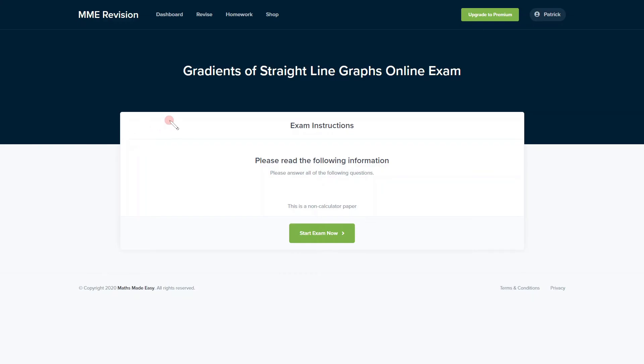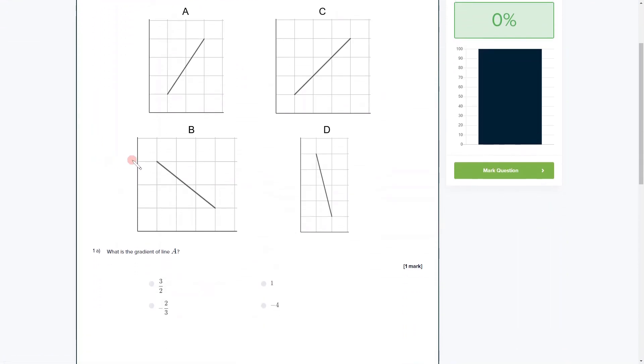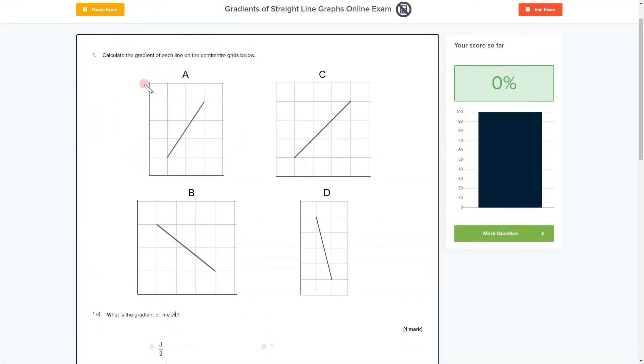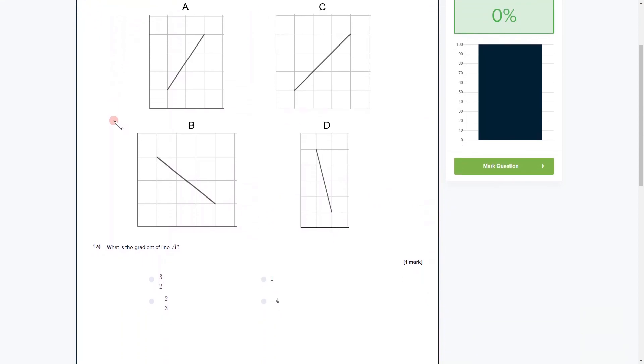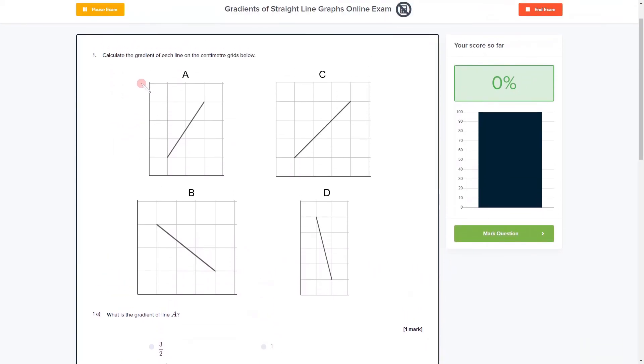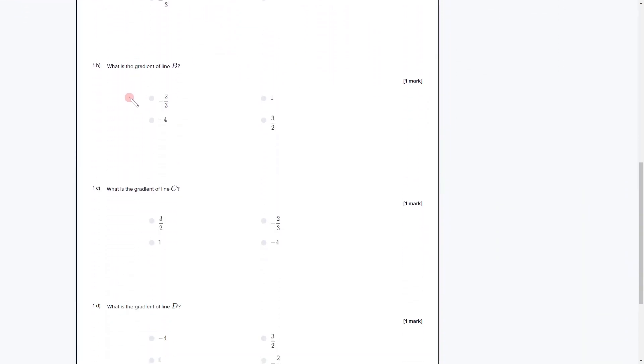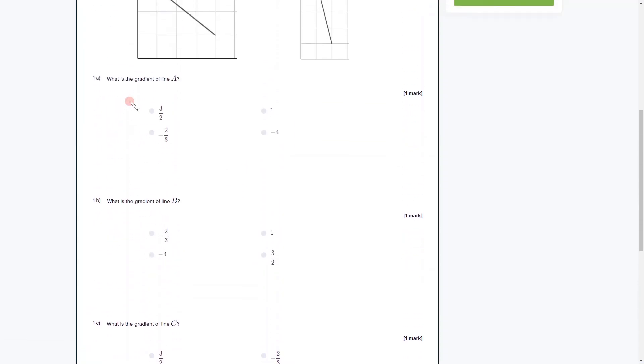If you'd like to see some practice questions on the gradients of straight lines, then you can take our online exam. There you'll find plenty of different questions, a variety of question types, and all of them will give you instant feedback so you can keep track of the areas you're weakest on and where you need to improve. If you're interested, you can click the link below and it'll take you straight there.